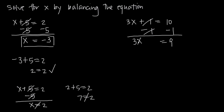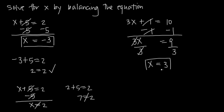Now in order to get x by itself, we need to divide by 3 to remove this coefficient from the x. So if we divide the left side by 3, we also have to divide the right side by 3. The 3s cancel on the left, leaving us with just x. On the right hand side, 9 divided by 3 is 3. So we get x is equal to 3 — that's our solution.